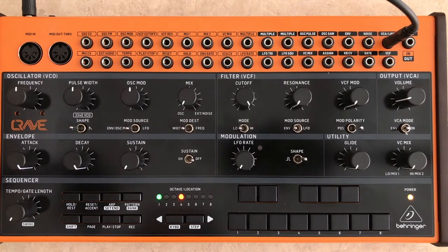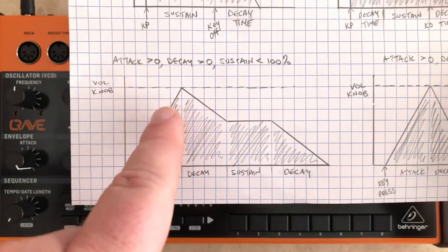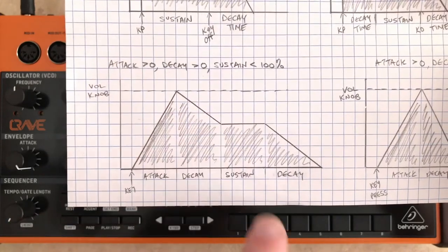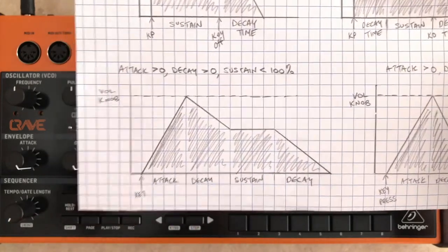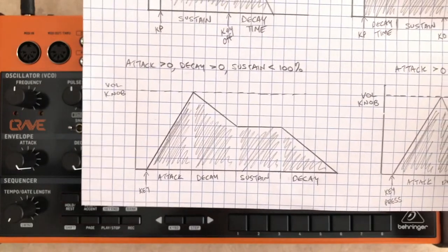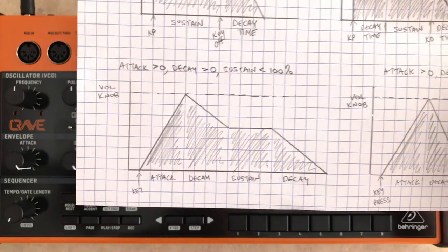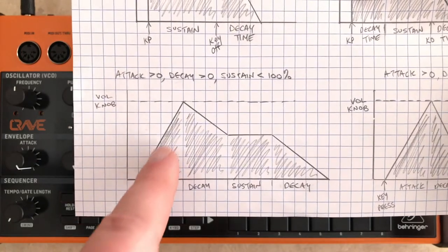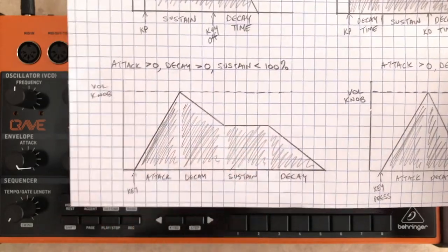If you remember in our last video where we talked about the envelope section, we talked about how the attack time would go up, the decay time would go down, and then sustain set a level. Keep that in mind while we talk about how it modulates other things besides volume — it'll be easier to understand. Attack adds voltage, decay removes voltage, sustain sets a level.